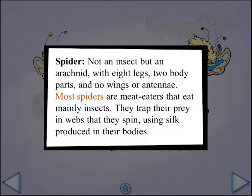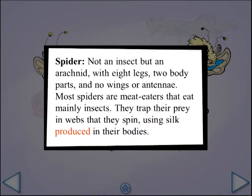Most spiders are meat eaters that eat mainly insects. They trap their prey in webs that they spin, using silk produced in their bodies.